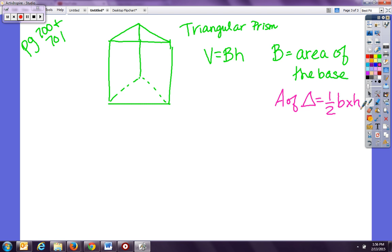So essentially our formula looks like this: Volume equals one half base times height of the base times height of the prism. Now I'll show you what that looks like.